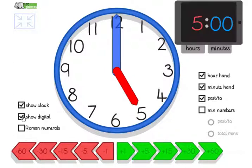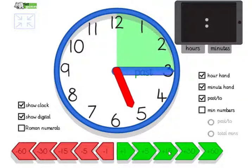We can also show the digital clock. So here's five o'clock. I can hide those by clicking on those. I'm going to set it to quarter past five now.